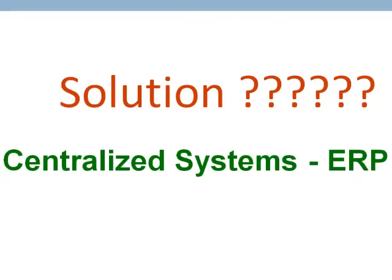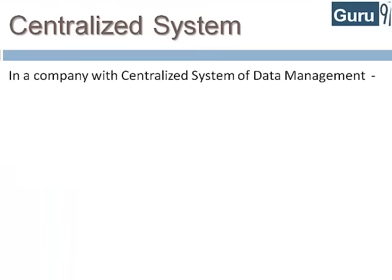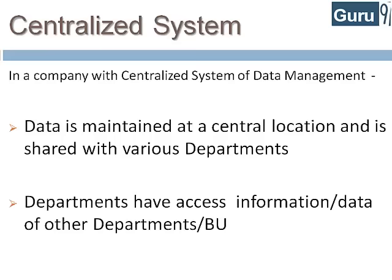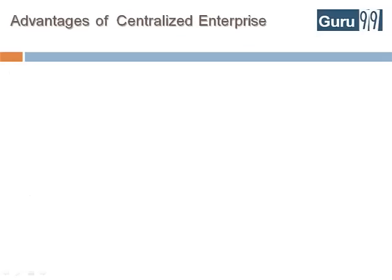The solution lies in centralized systems, that is, ERP. In a company with a centralized system of information and data management, data is maintained at a central location and is shared with various departments. Departments have access to information or data of other departments. Let's look at the same business process again to understand how a centralized enterprise system helps overcome problems posed by a decentralized enterprise system.